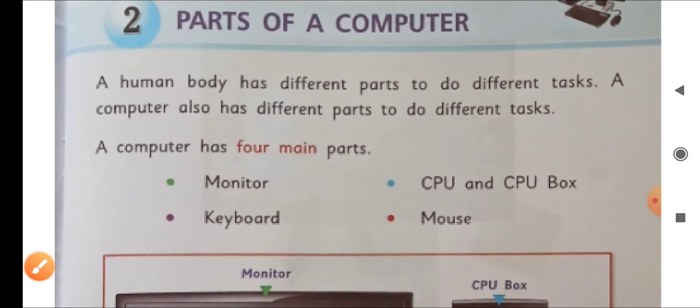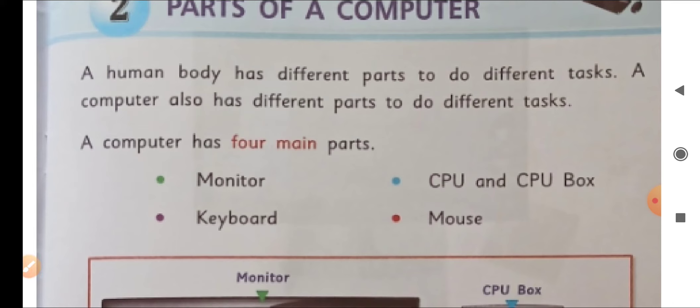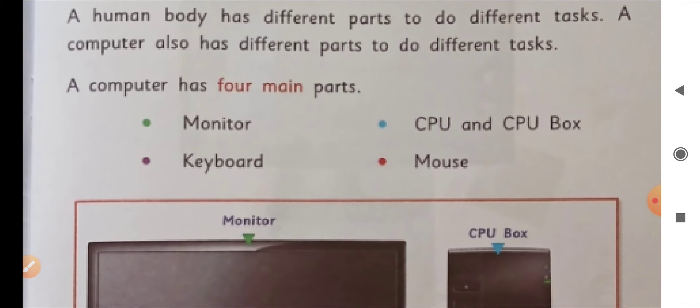So as our body has different parts — our body has hands, eyes, brain, legs, everything — these are the parts of our body, yes or no? And they do their own work accordingly. Legs are used to walk, hands have various works, eyes are there to see, ears are there to hear. So they have their own work. Similarly, a computer system also has different parts to do its tasks properly.